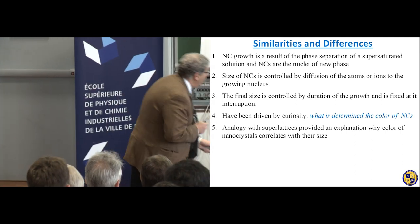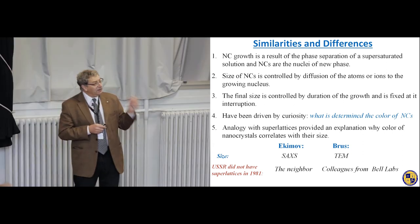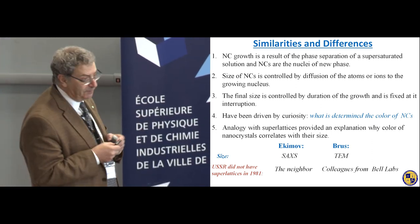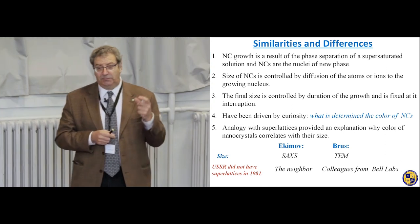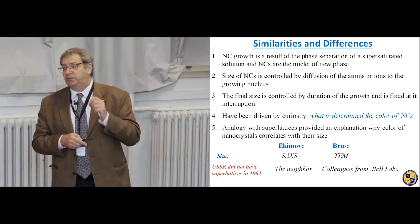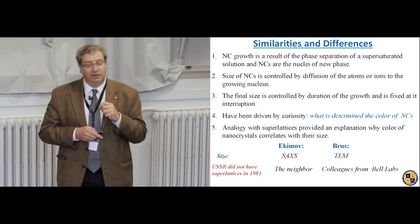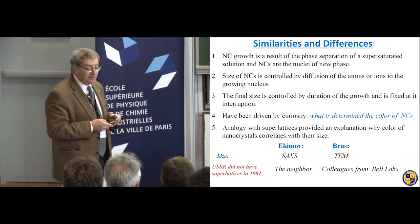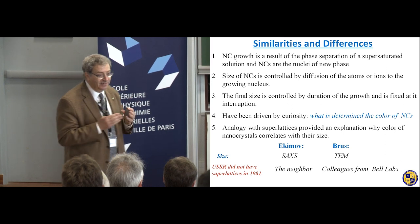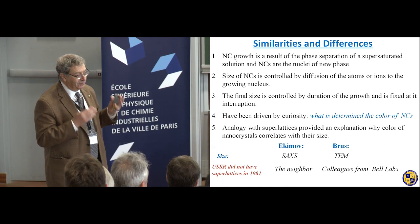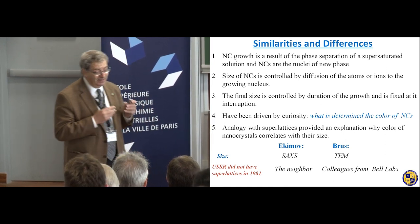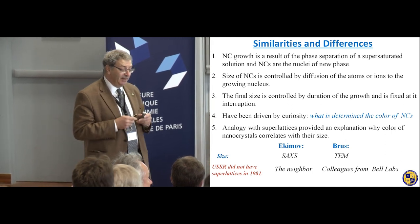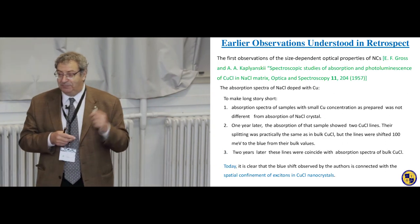In both cases, the explanation of why color of nanocrystals correlates with size came from existing data on one-dimensional superlattices. The difference was how Ekimov and Brus measured the size of nanocrystals: Ekimov used small angle X-ray scattering, which slightly overestimates the size, and Brus used TEM, which slightly underestimates the size. More interestingly, Ekimov's quantum dot nanocrystals were grown in the Soviet Union before the first superlattices were grown in Alferov's lab in 1984.